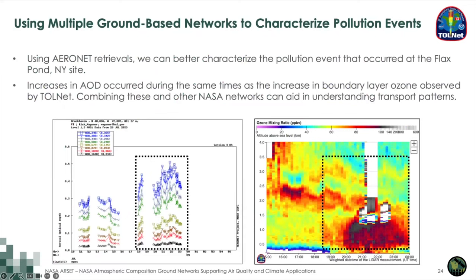I also wanted to connect the TOLNet data back to a previous portion of this RSET training with the AERONET data — using multiple ground-based networks to better characterize pollution events. On the left we have the AERONET aerosol optical depth on the same day as the TOLNet boundary layer ozone on the right. Combining these two NASA ground-based networks, we can begin to understand chemical transport patterns and see that on this day there was an increase in both aerosol burden and ozone burden — both of which are concerns for public health.